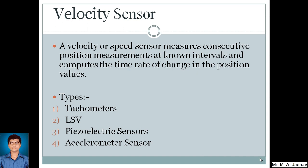The different types of velocity sensors are tachometers, LSVs, piezoelectric sensors, accelerometer sensors. So let's see these types one by one.